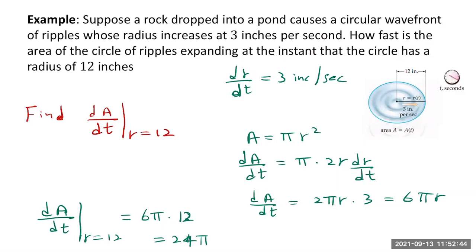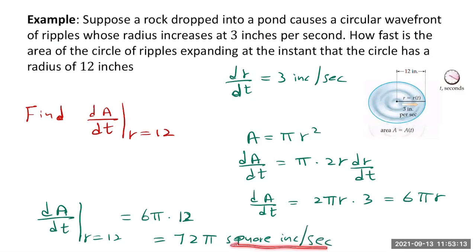So the area is expanding at a rate of 72π square inches per second. The unit is square inches per second because area involves squared dimensions.